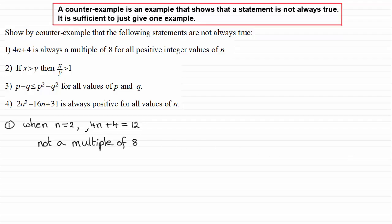It's true for n equals 3, but you'll find it's not true for n equals 4 — you'd get 20, which is not a multiple of 8. But you don't need to keep showing other examples of it not working. Just one example will do. You might like to pause the video and have a go at numbers 2, 3, or 4, then fast forward to check how I've done these examples.